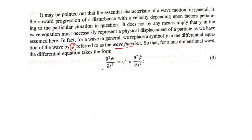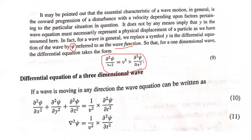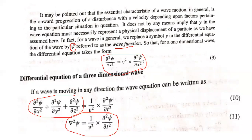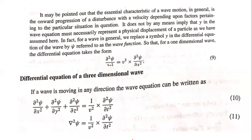We call this the wave function, so y can be replaced by ψ, giving ∂²ψ/∂t² = v² · ∂²ψ/∂x². Extending to three dimensions: ∂²ψ/∂x² + ∂²ψ/∂y² + ∂²ψ/∂z² = (1/v²) ∂²ψ/∂t². This is called the three-dimensional wave equation. Thank you.